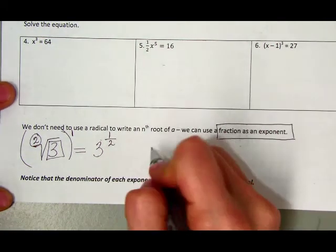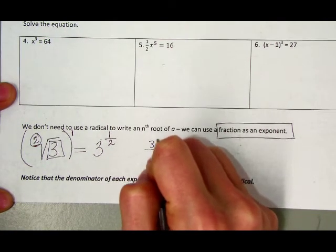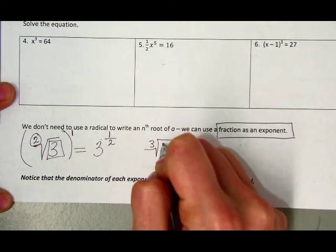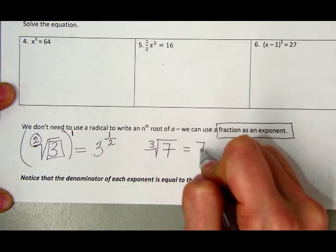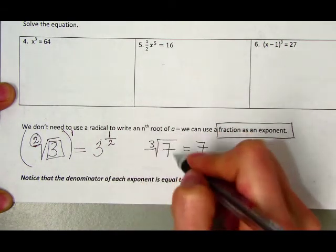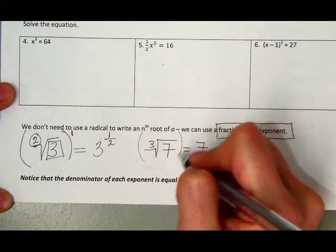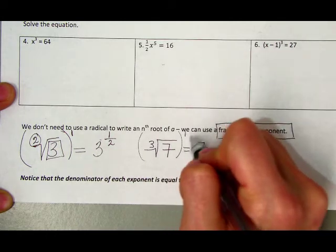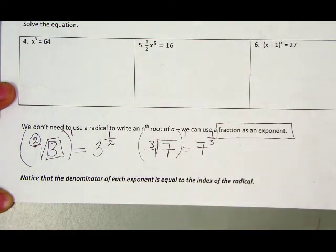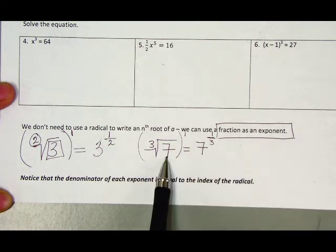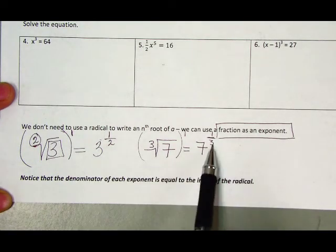So here's another example. Third root or cube root of 7, we can write as your radicand becomes your base. This whole thing is not being raised, it is being raised to a number, but it's being raised to an invisible number of 1. So that 1 becomes our numerator, and our index becomes our denominator. So the cube root of 7 can also be written as 7 to the 1 third power.